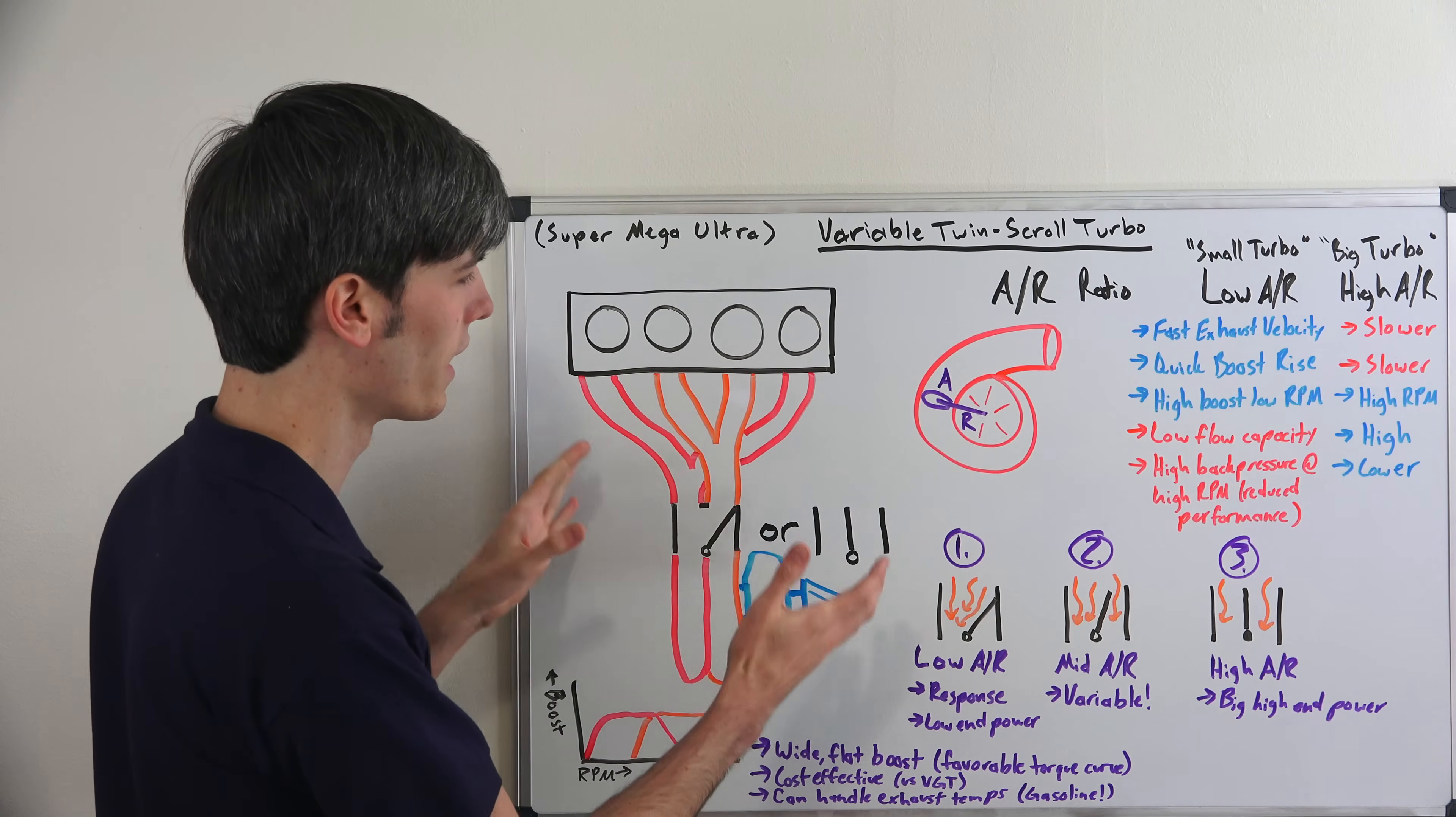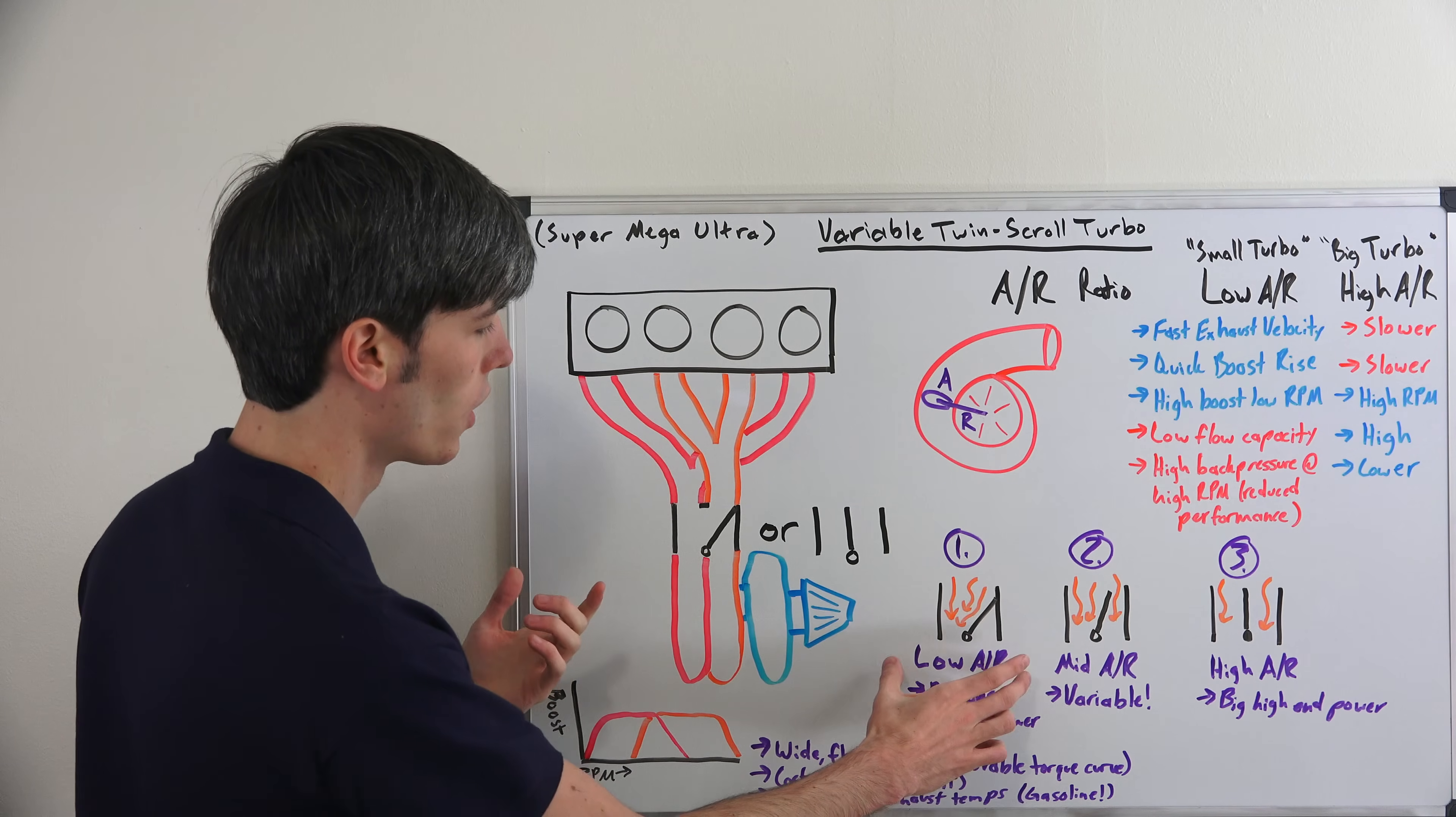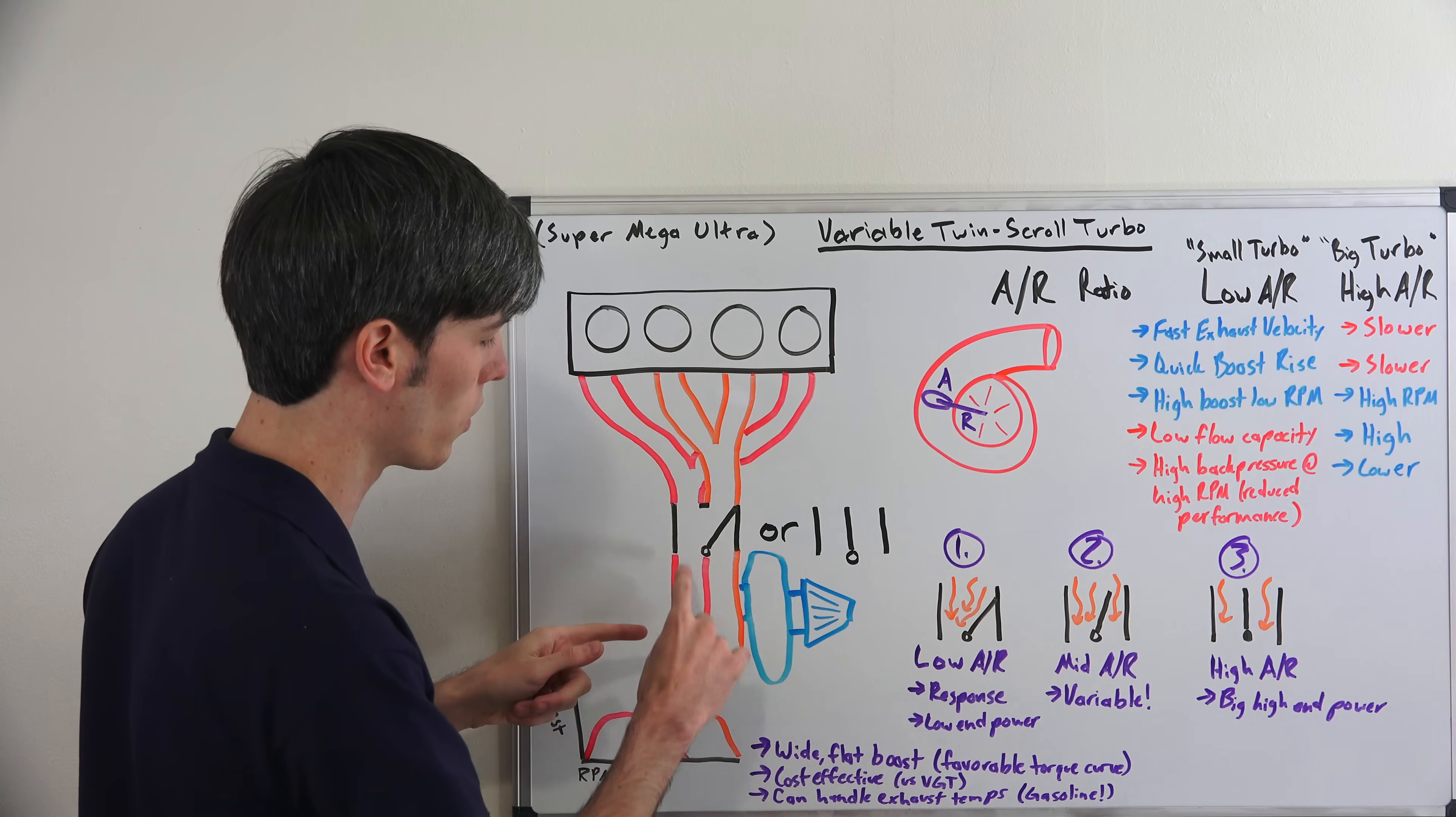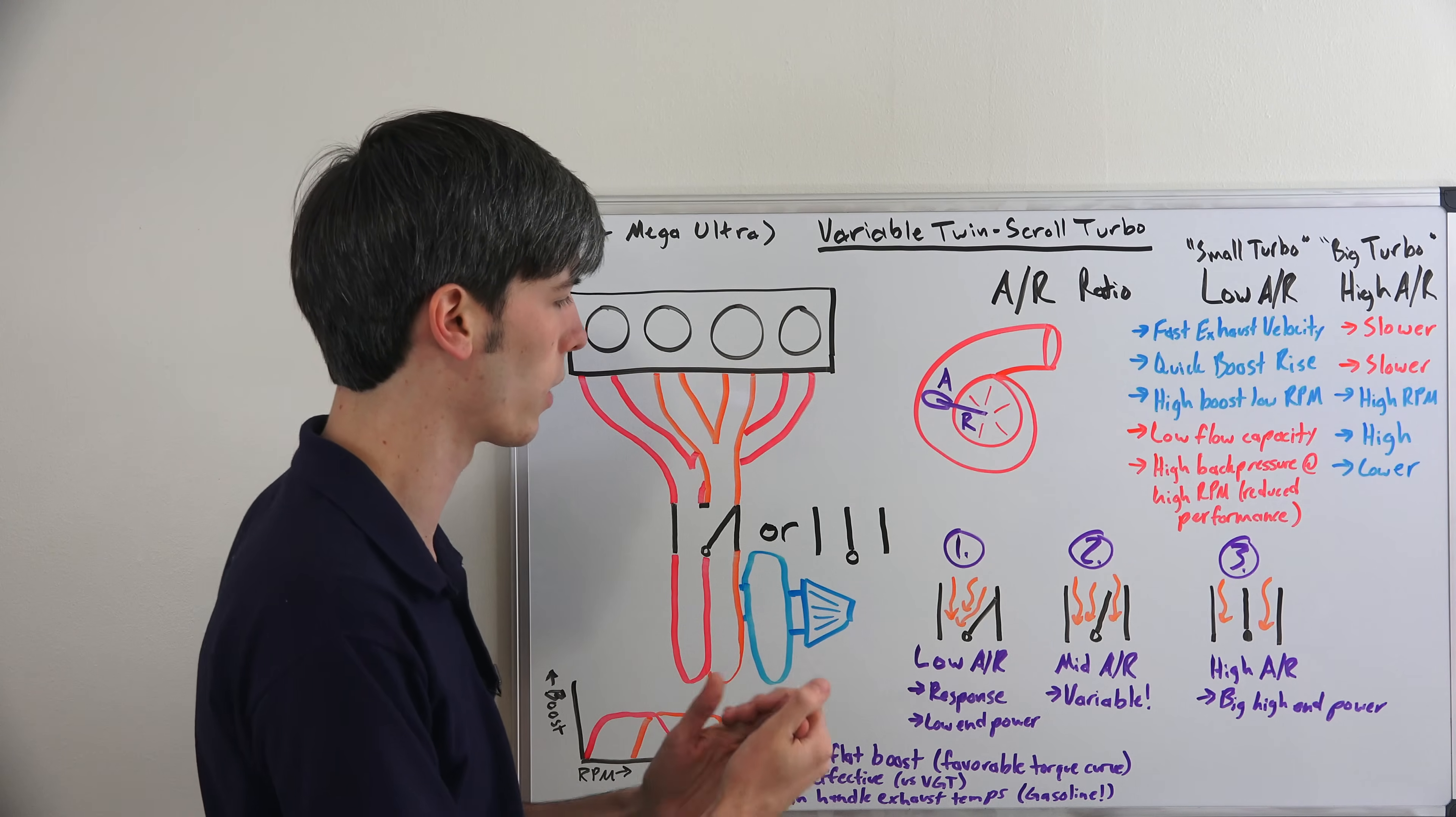So what this system is doing is altering the AR ratio throughout the process. When you first get started, as I mentioned, you have a low AR ratio. It's going to close off one of the scrolls and all of the exhaust gases are forced to go into one of the scrolls and spool up. This low AR will happen very quickly and you'll be able to get into boost very quickly.